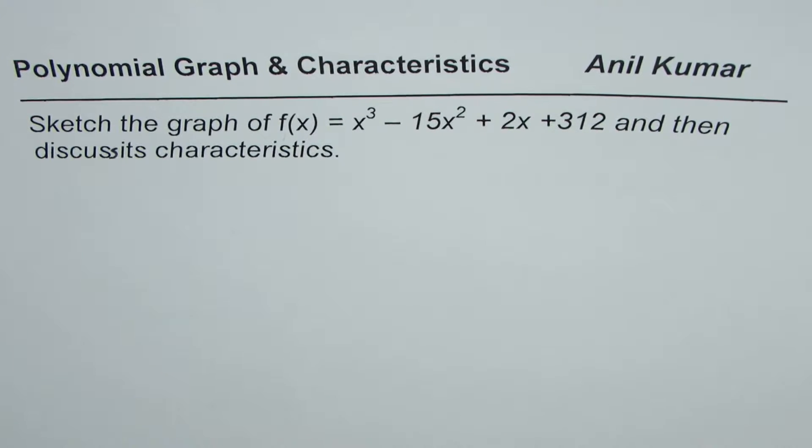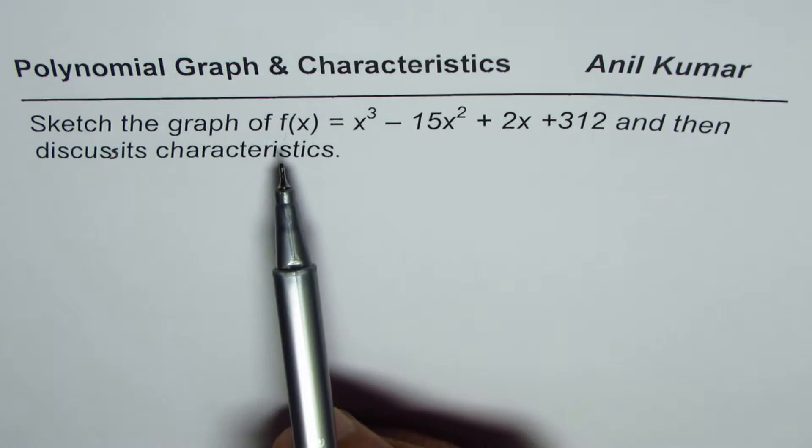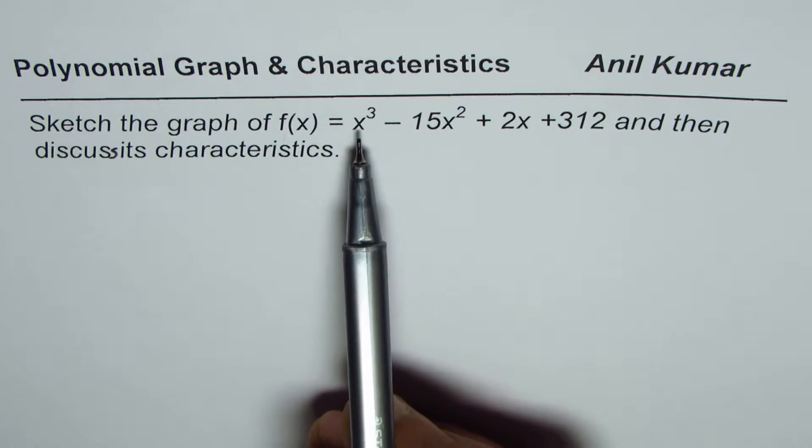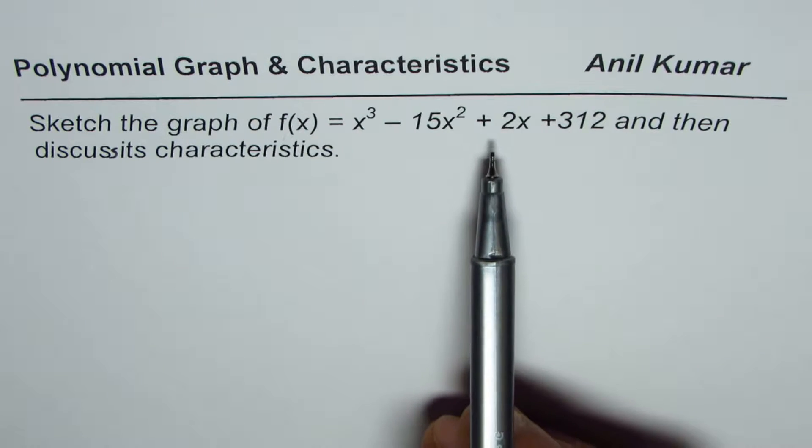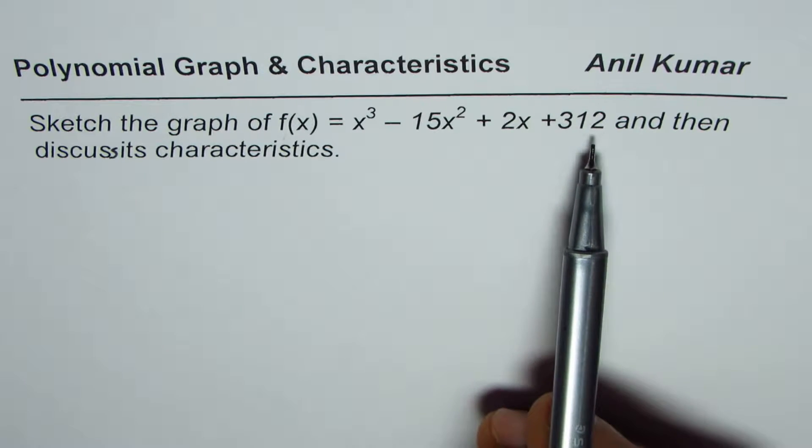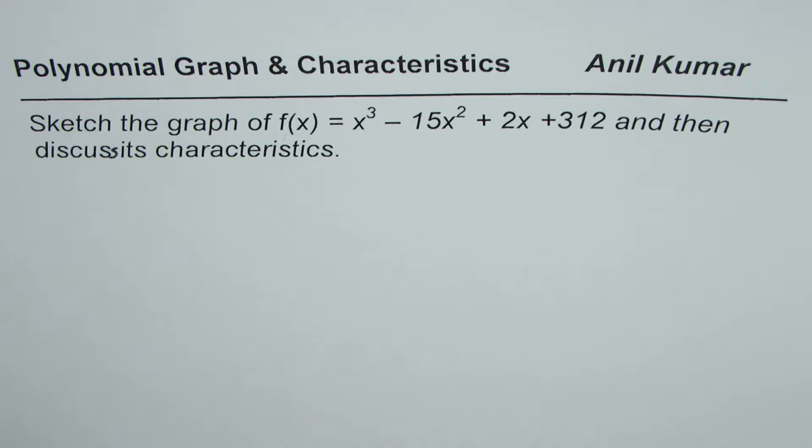I'm Anil Kumar sharing with you a question from my subscriber. We need to sketch a polynomial and write down its characteristics. The question here is sketch the graph of f(x) = x³ - 15x² + 2x + 312 and then discuss its characteristics.